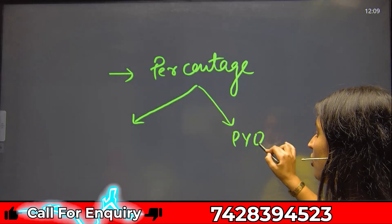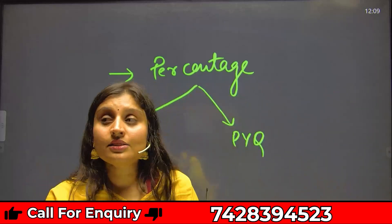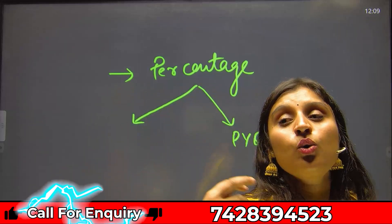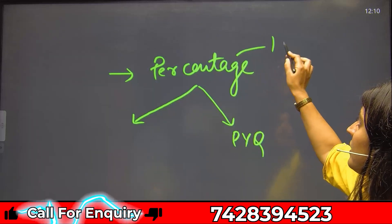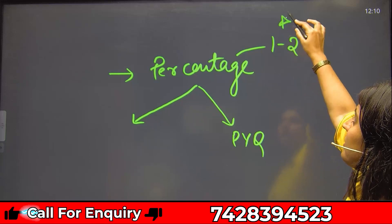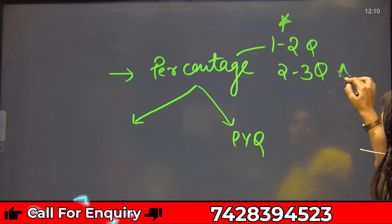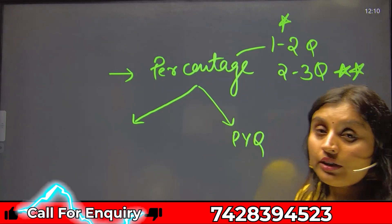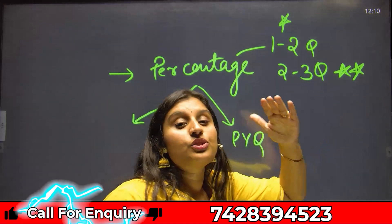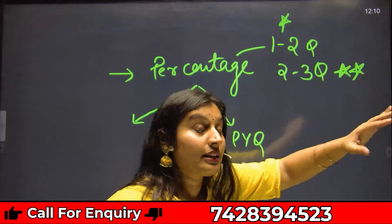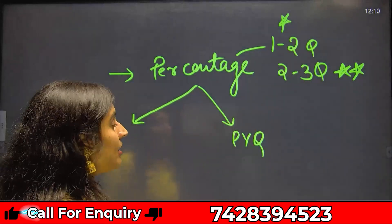Then you will check the PYQ — previous year questions — and after that you will see the number of questions asked. You assign importance: if there are 1–2 questions, mark it 1 star; if there are 2–3 questions, mark it 2 stars. Two stars means high importance, one star means moderate importance.